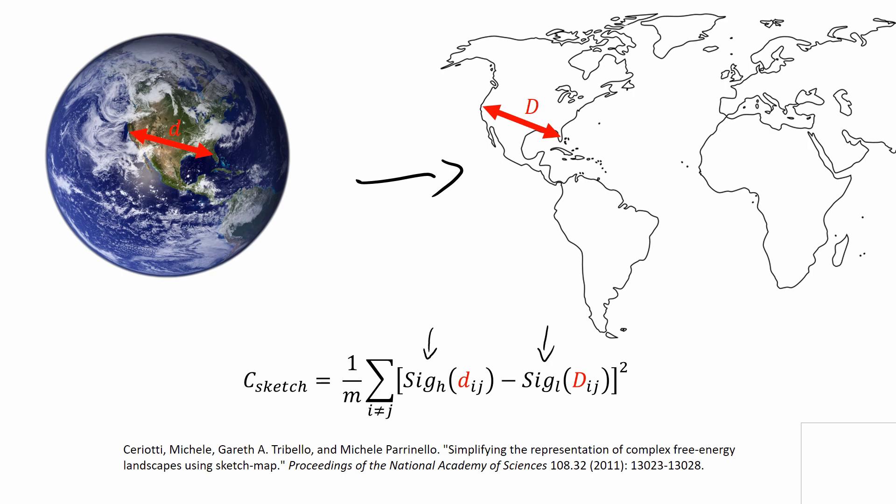This is why the sketch map cost function is based on these sigmoid functions of the pairwise distances. Tuning these sigmoid functions allows to select which range of the distances the optimization should focus on. The sigmoid functions are most steep around the parameter called sigma, and therefore the optimization will mainly focus on distances close to this sigma value. In our world map example, we could for example say we care most about the distances between cities nearby and not so much about the distances to cities on the other side of the globe.